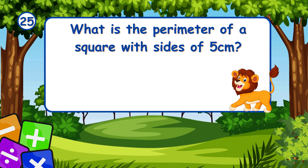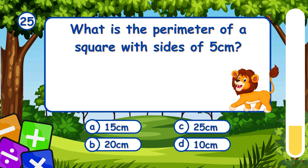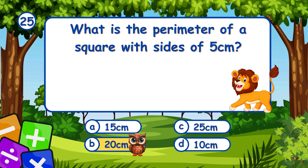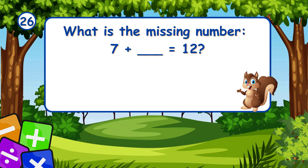What is the perimeter of a square with sides of 5 centimeters? It's B, 20 centimeters. The perimeter of a square with 5 centimeter sides is 20 centimeters.